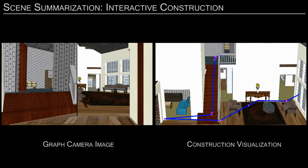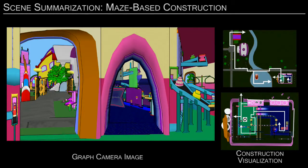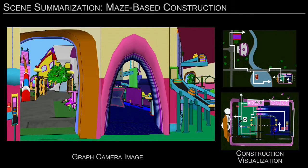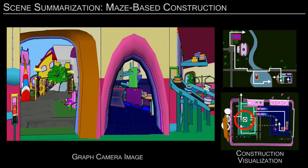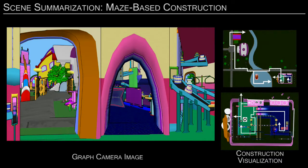Here, the graph camera samples both floors of the house by compressing the stairs. Summarization images can also be rendered with maze-based graph cameras. Here, the graph camera rays start at O and sample the two rooms of the bakery as well as outside.